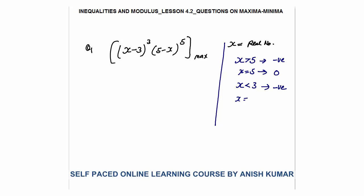When x equals 3, this becomes 0 again. So when is the product positive? When x is between 3 and 5, both terms are positive: x minus 3 is positive, and 5 minus x is positive, so positive cubed times positive to the 5th gives a positive product. That is the range at which the product will be maximum — x between 3 and 5.